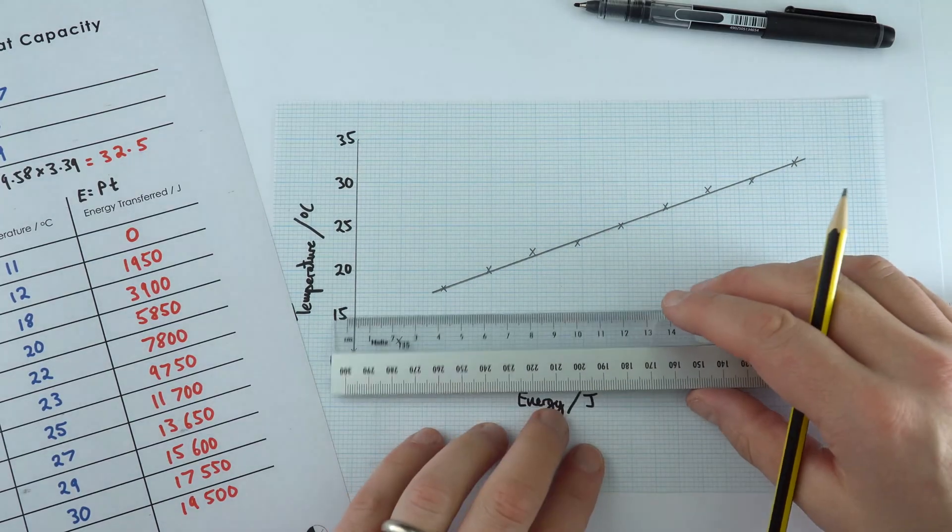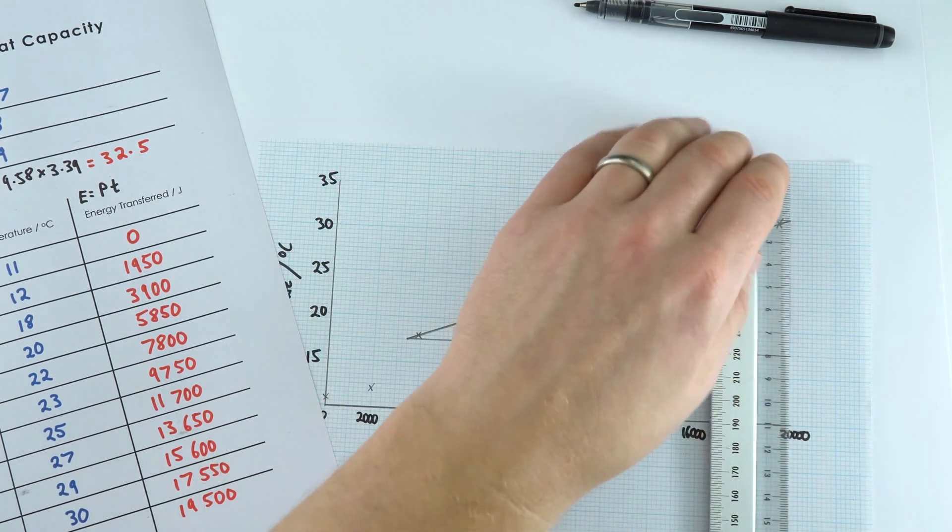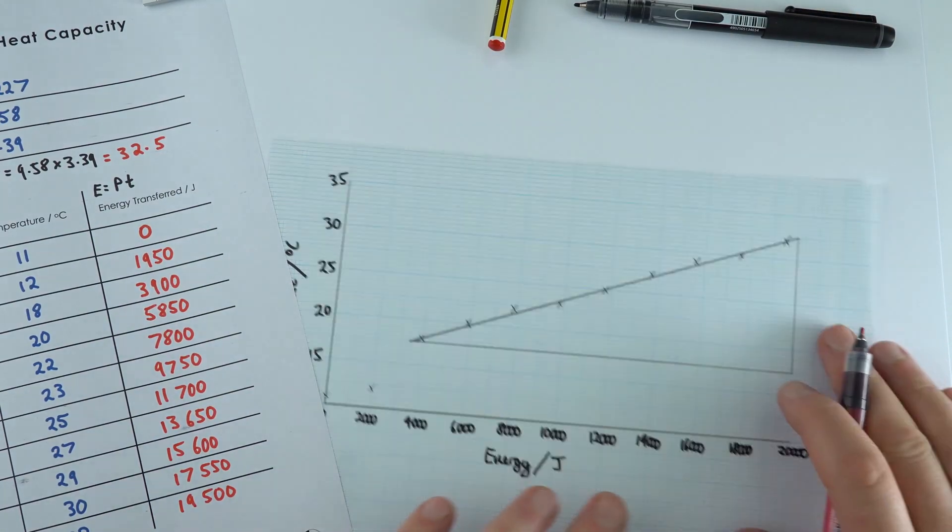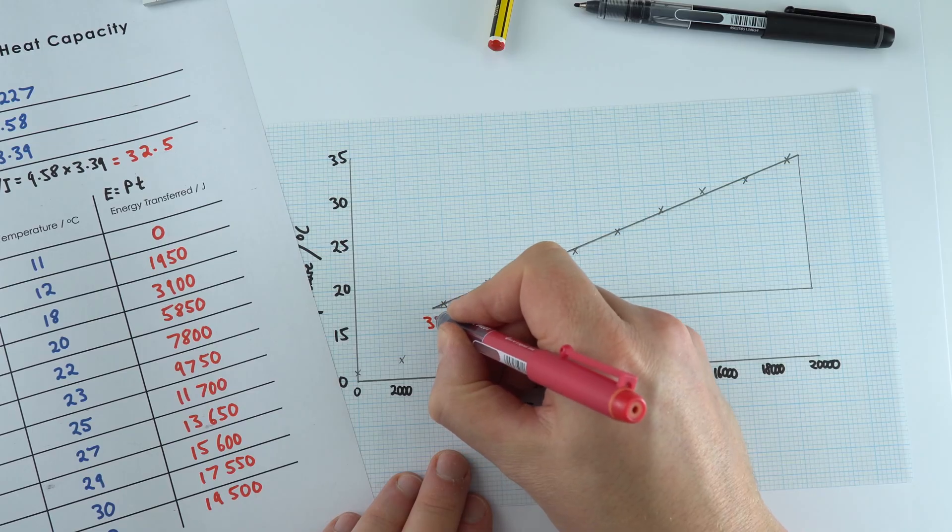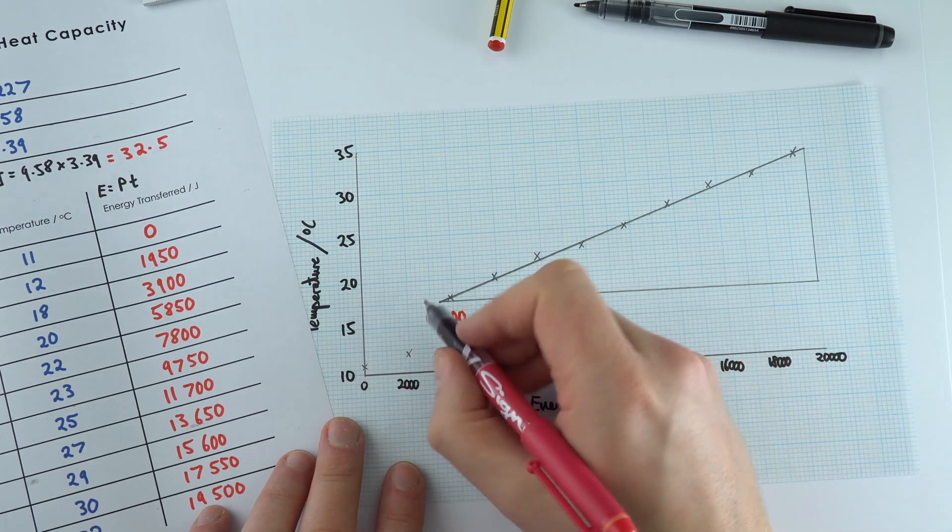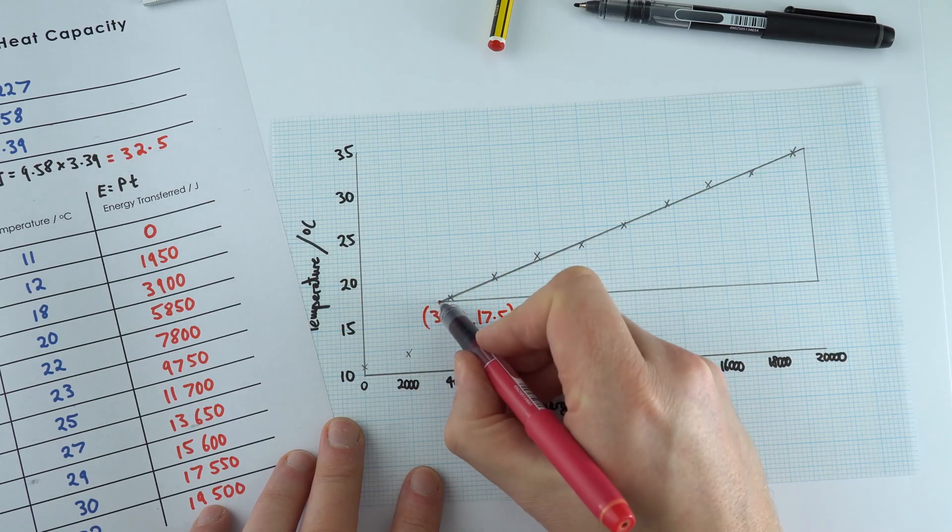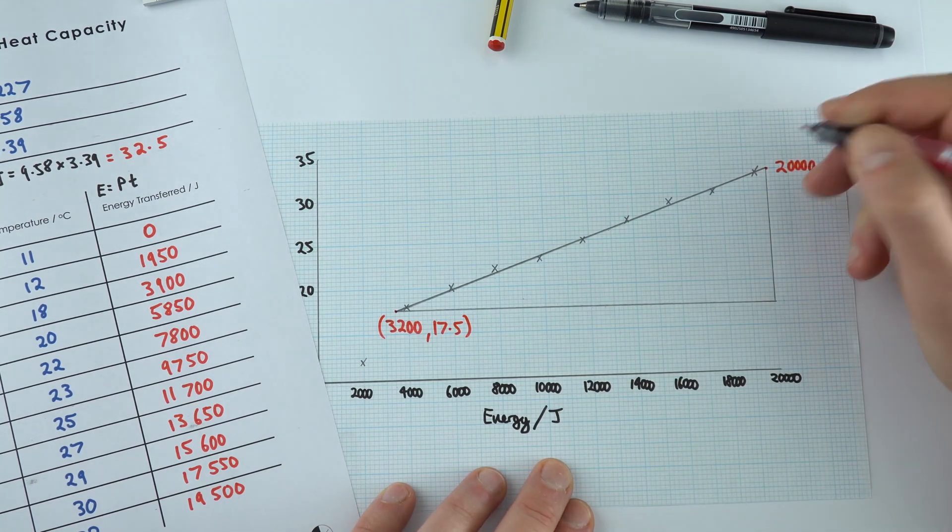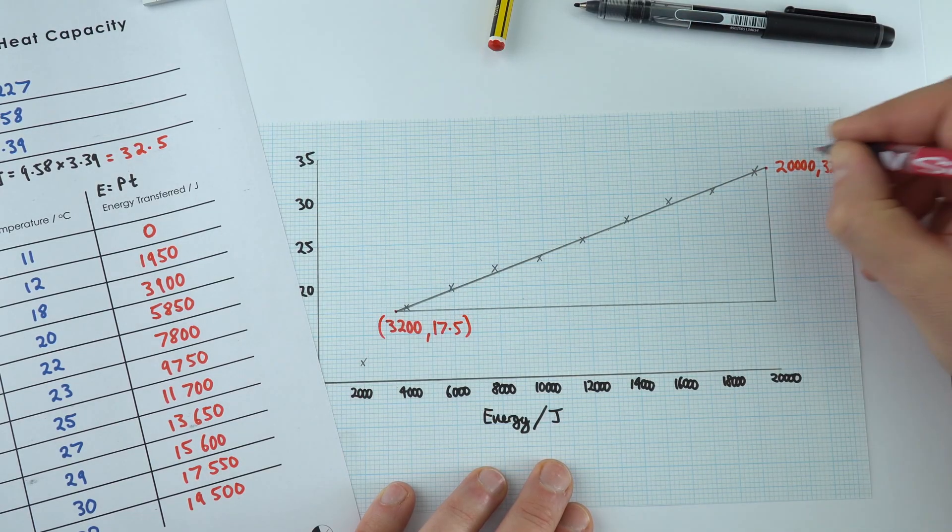So to work out the gradient, I'm just going to draw a triangle onto this. I'm just going to go across here up to here like that. Now I'm just going to put on some of the points that we have. Over here we have a value of about 3,200 on the energy, and the temperature here is midway between 15 and 20, so that's 17.5. This point up here, the energy is 20,000 and the temperature is 32.5.